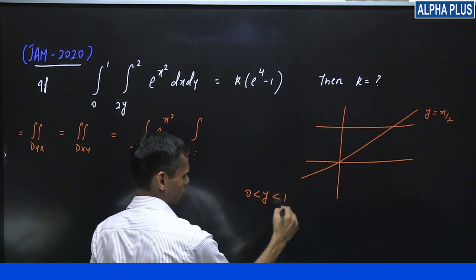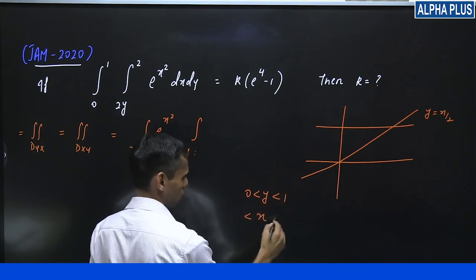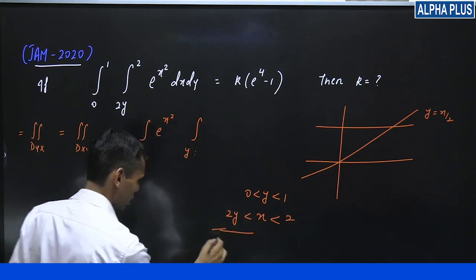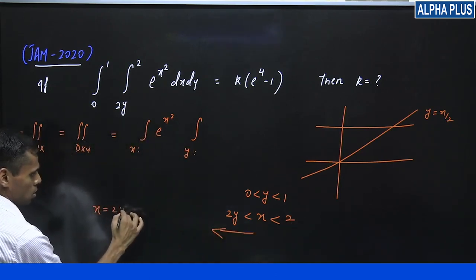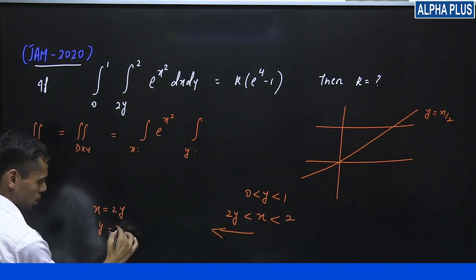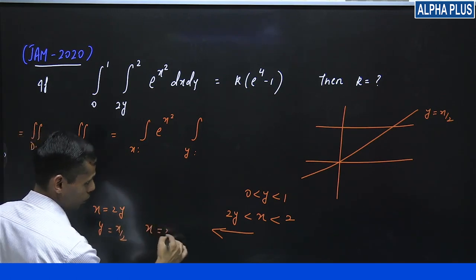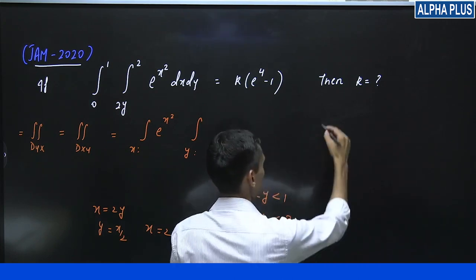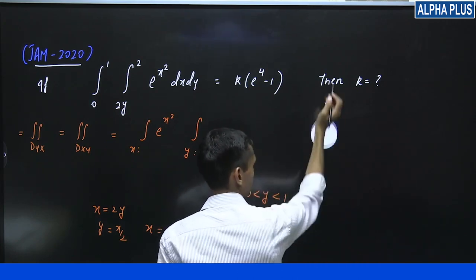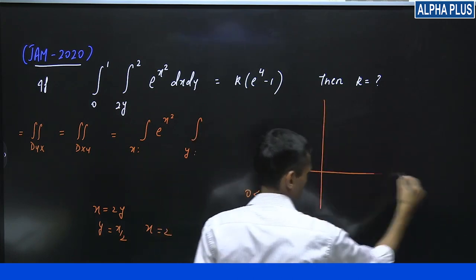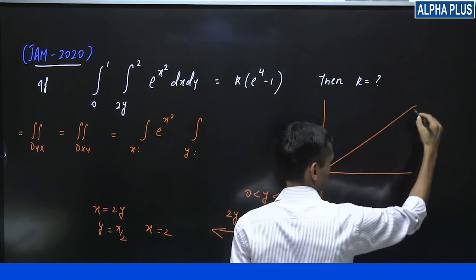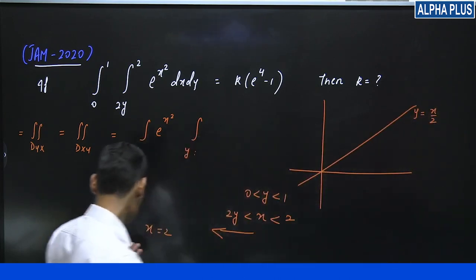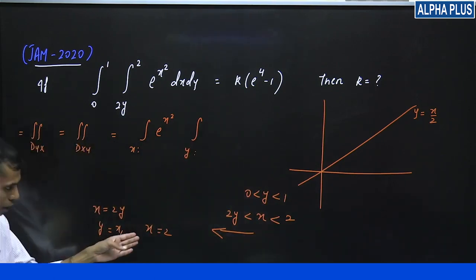y 0, x is given 2y and 2. So x is equal to y and 2. So this is y equal to x by 2 line. So x is equal to y and x is equal to 2.